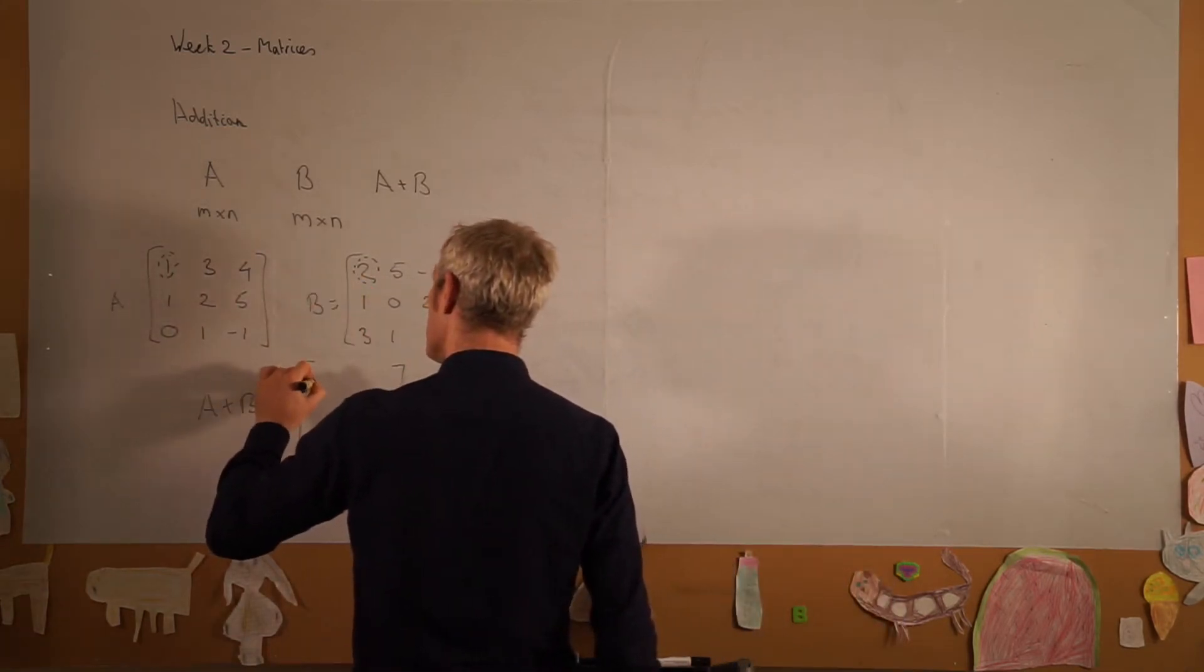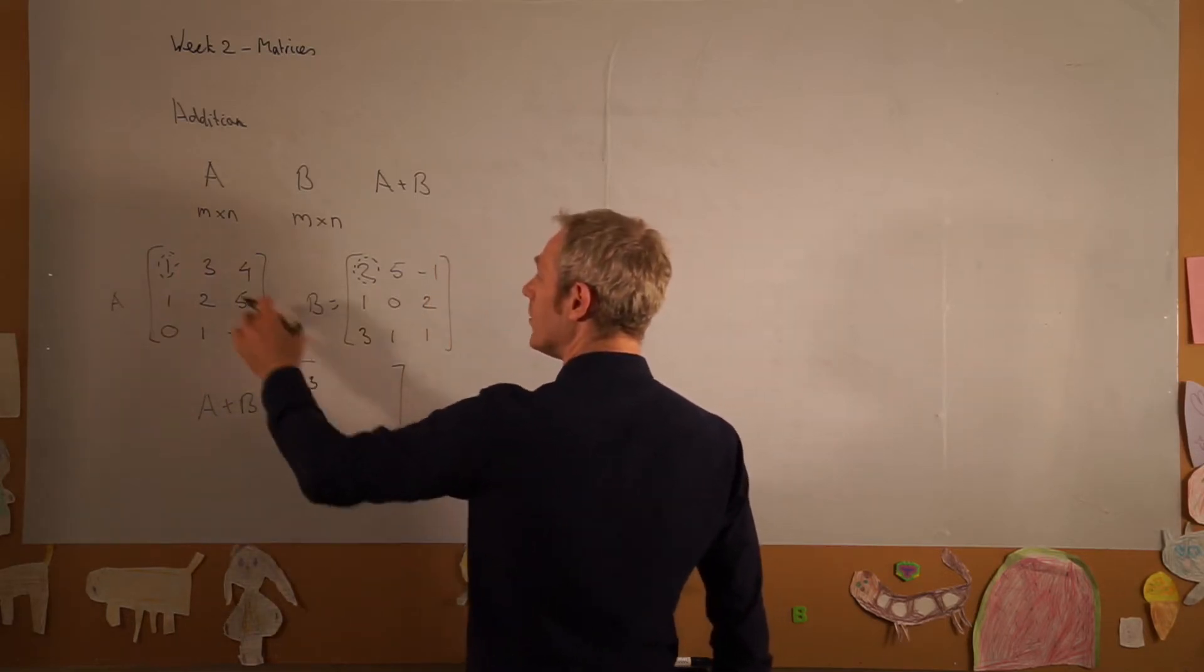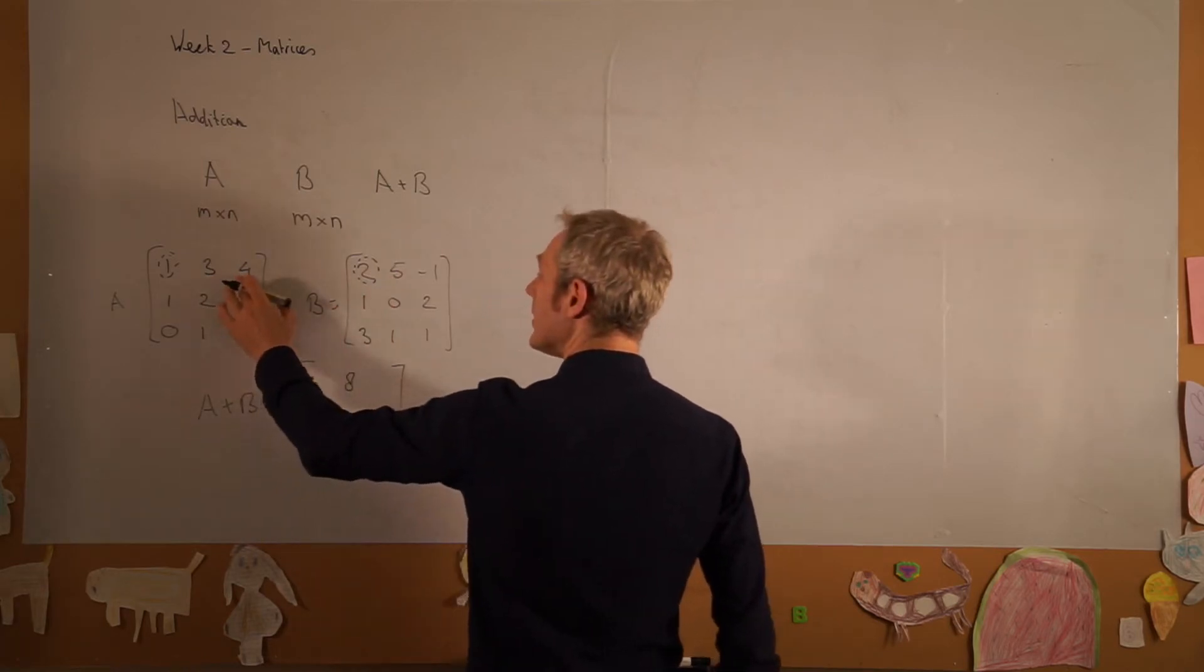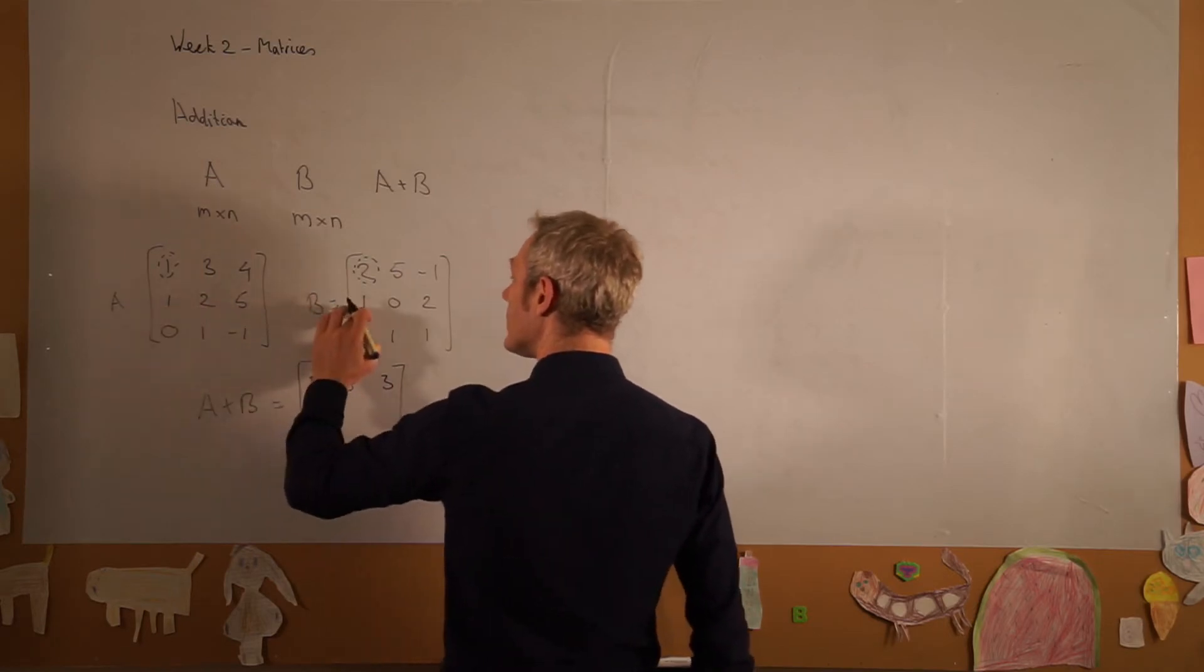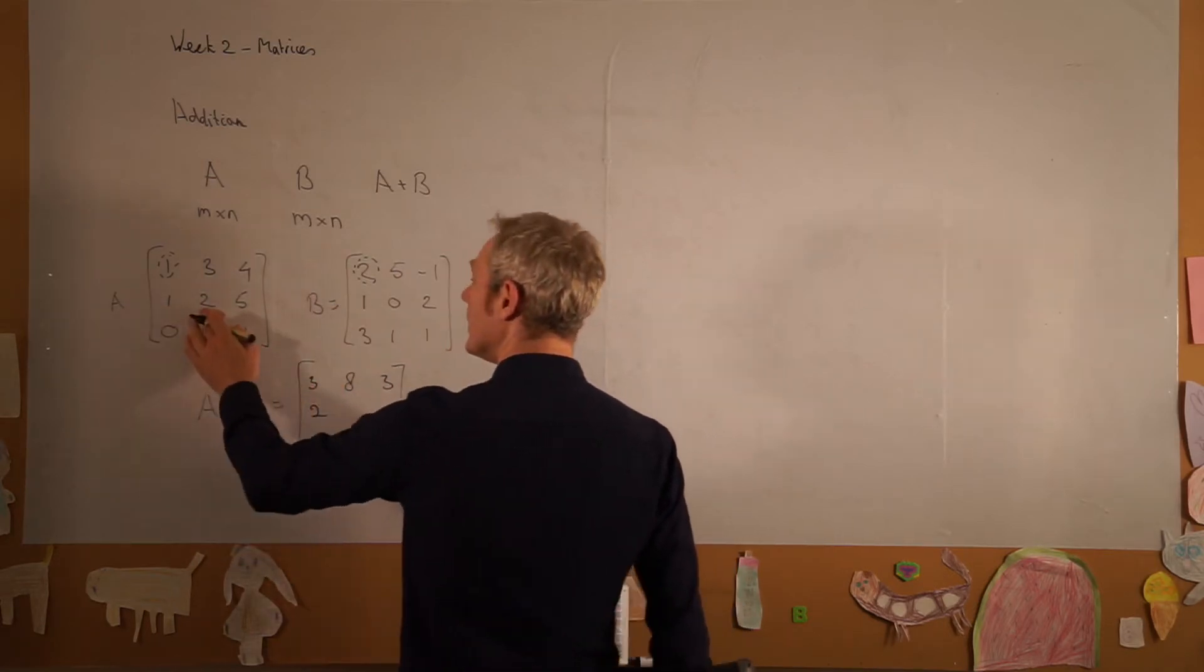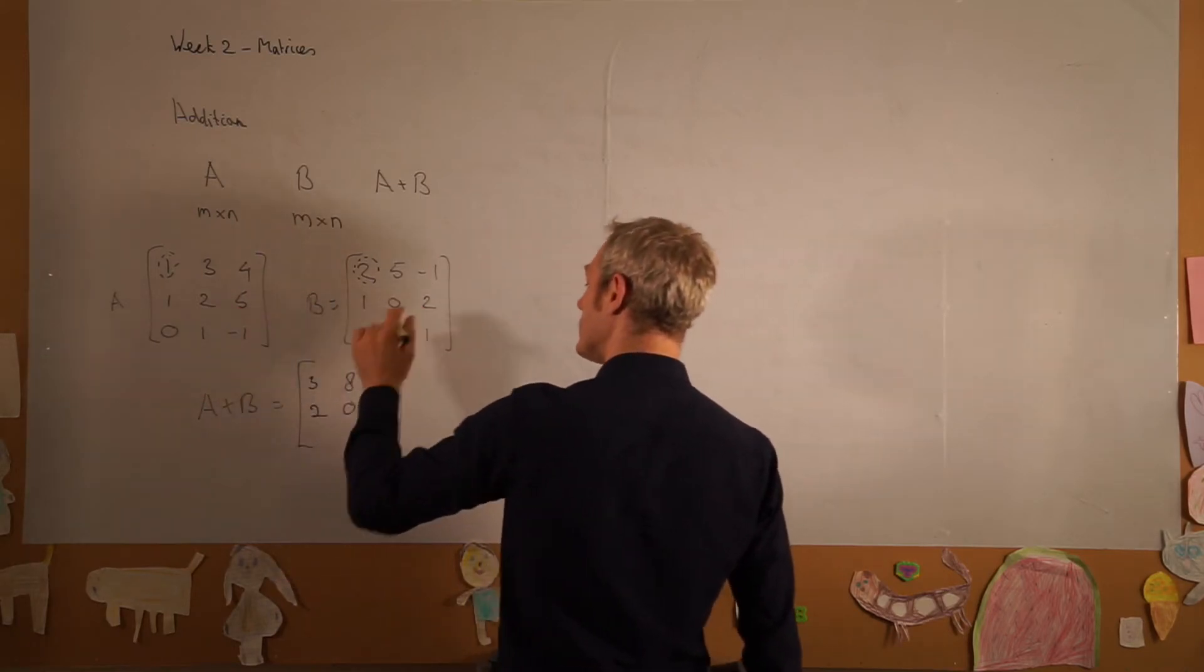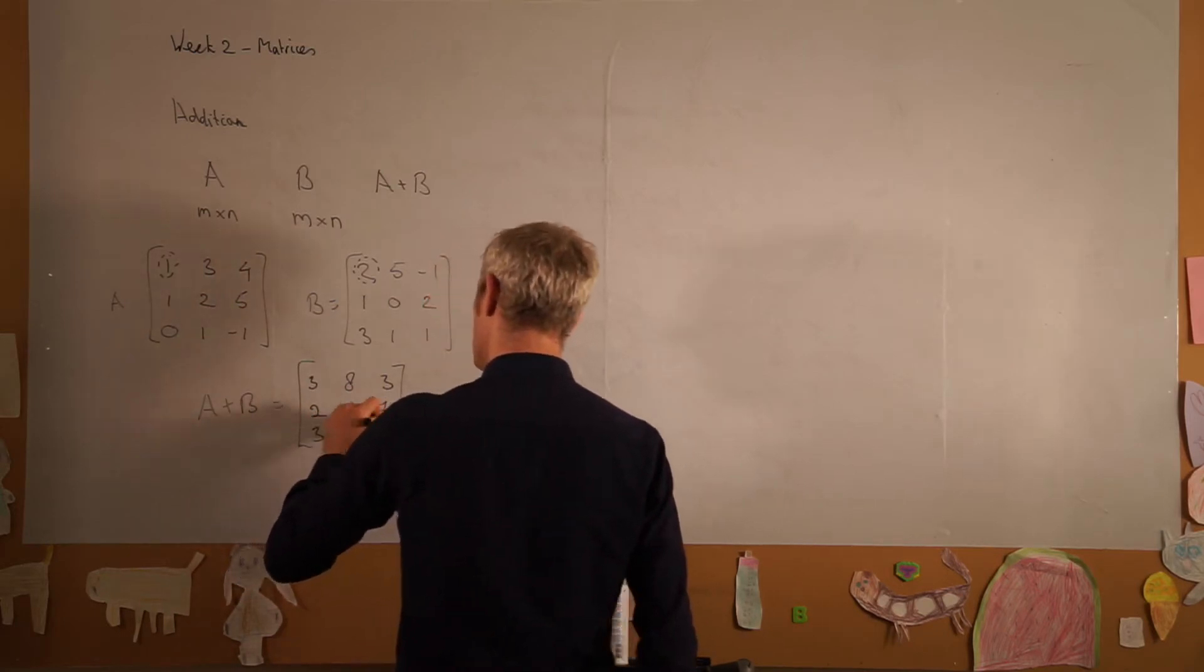This one in the top row in the middle will be 3 plus 5, equal to 8. Then we get 4 minus 1 is 3. The next row: 1 plus 1 is 2, 2 plus 0 is 0, 5 plus 2 is 7, and for the bottom row we do the same.